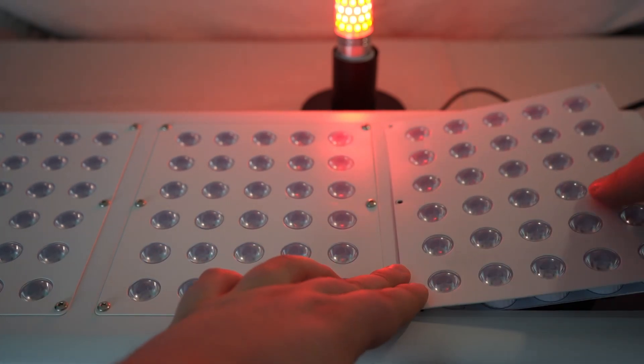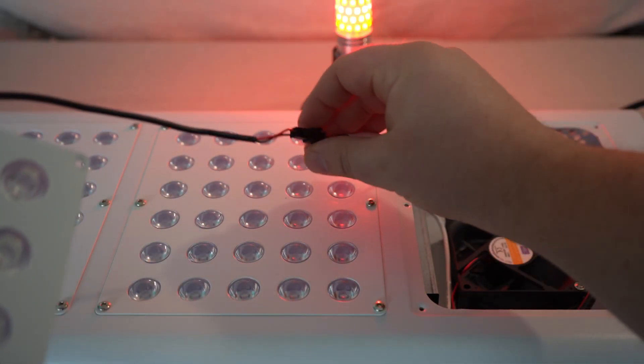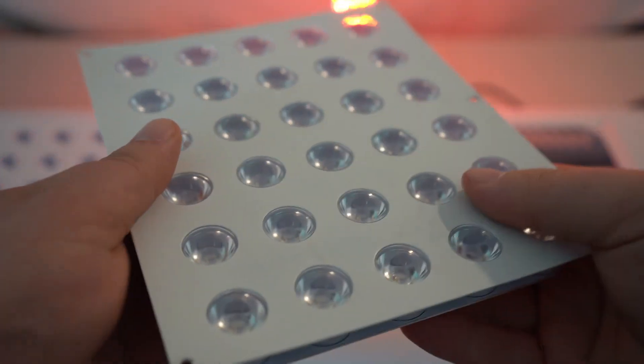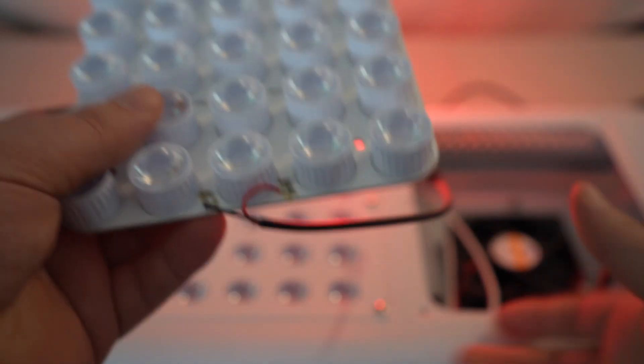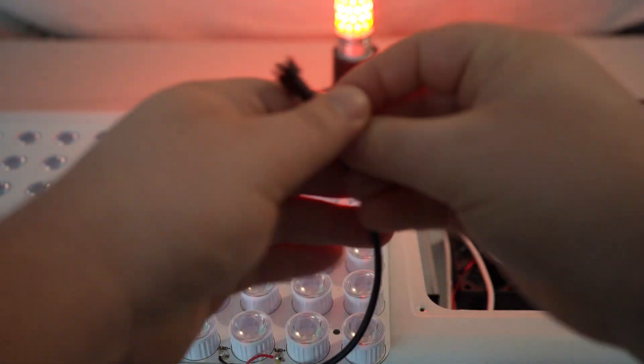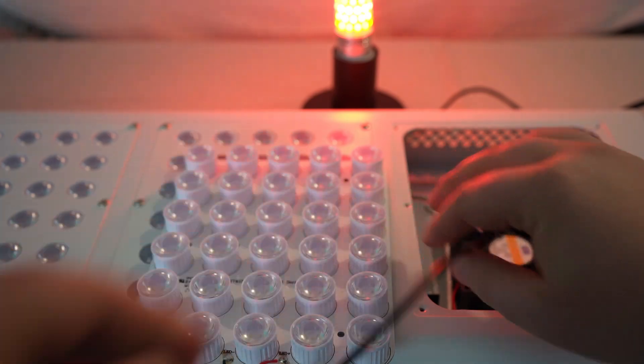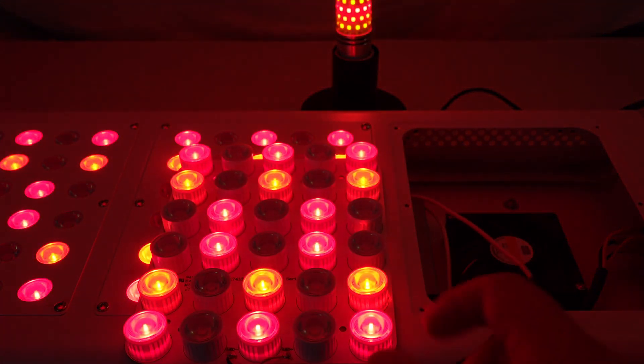And all we have to do is we pull it out. There's just a simple connector here. And then we pull out the defective module. And then let's say we've got a replacement module here. We can just plug it in and show how that works. So we just plug in the replacement and that lights up.